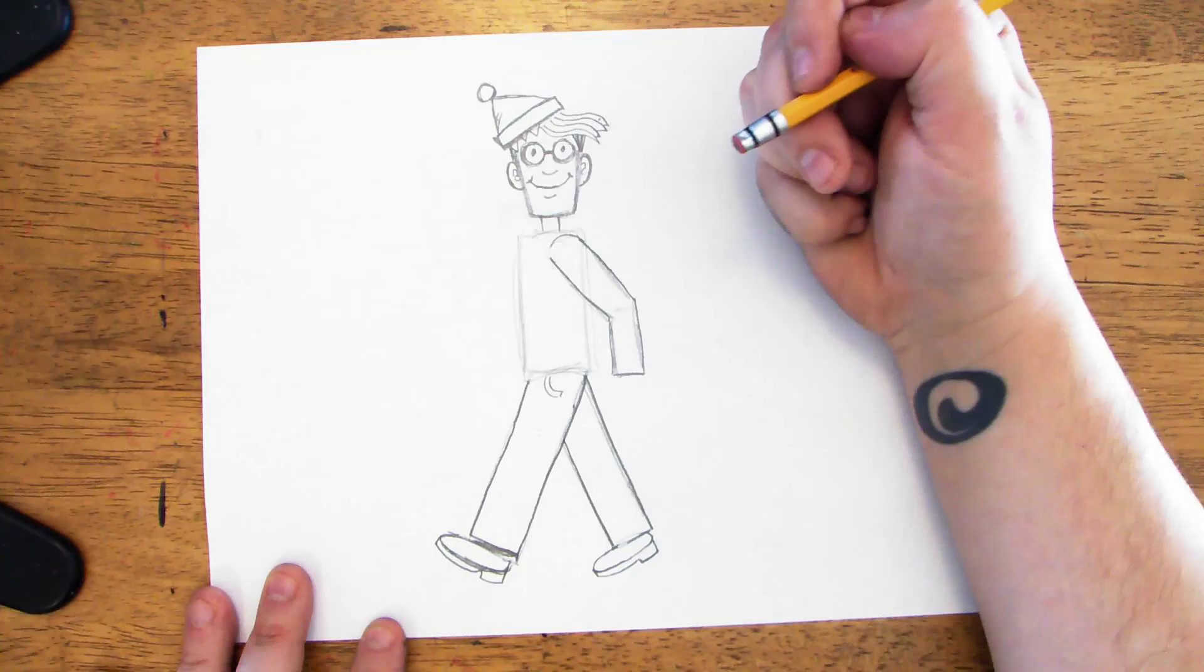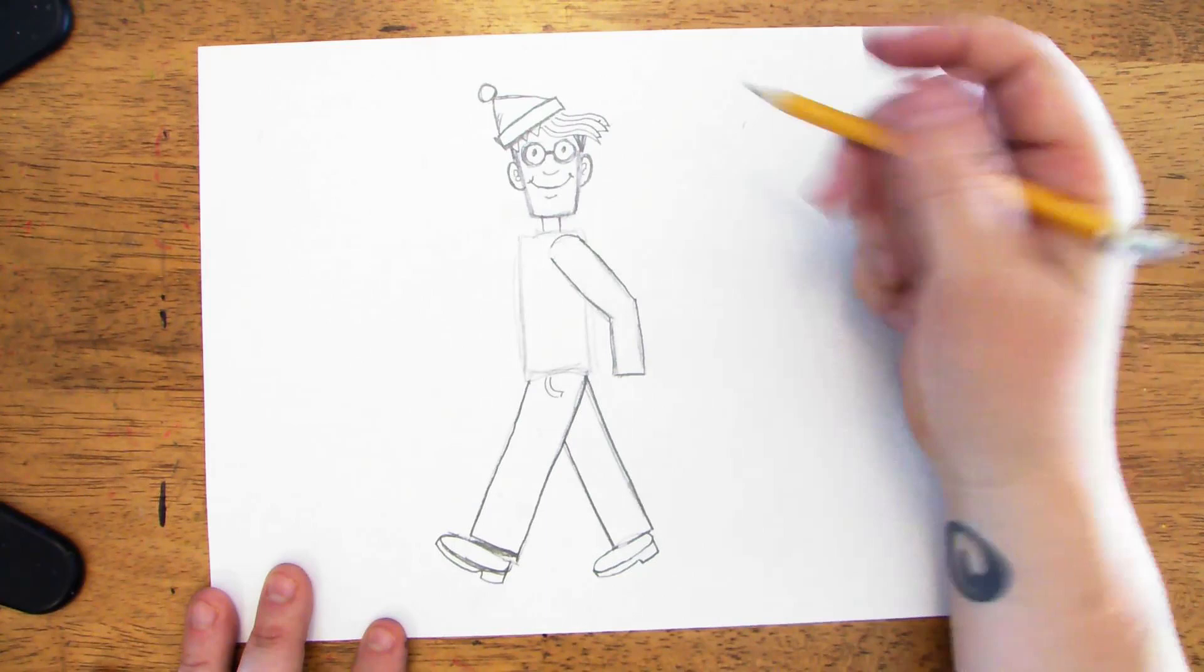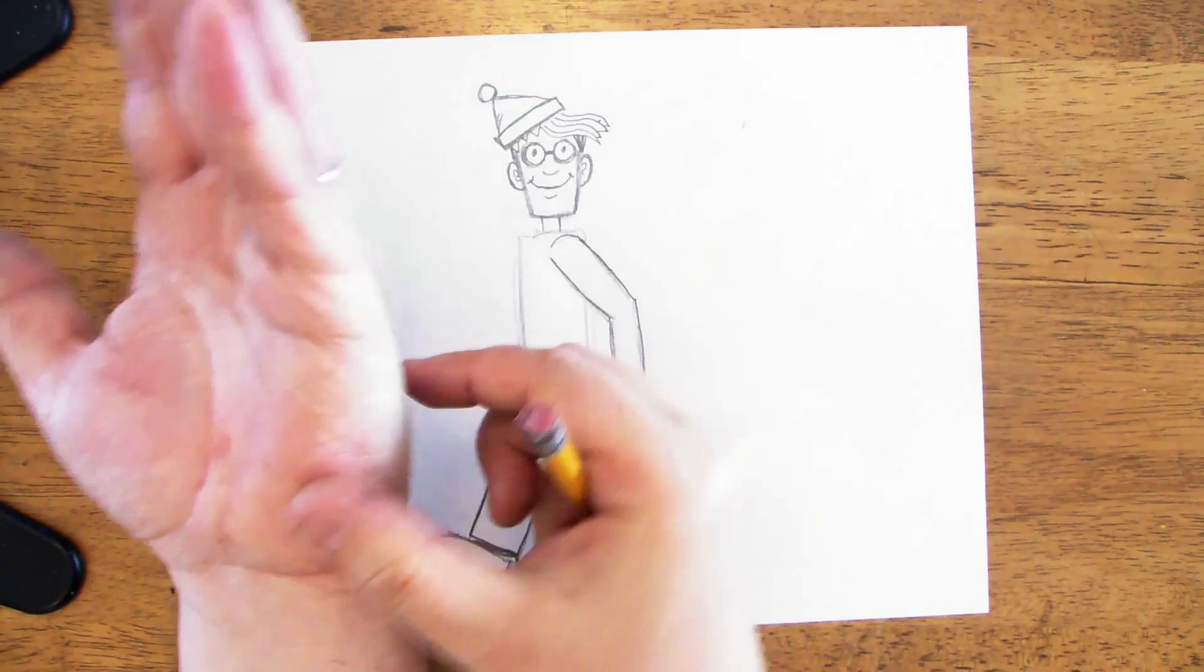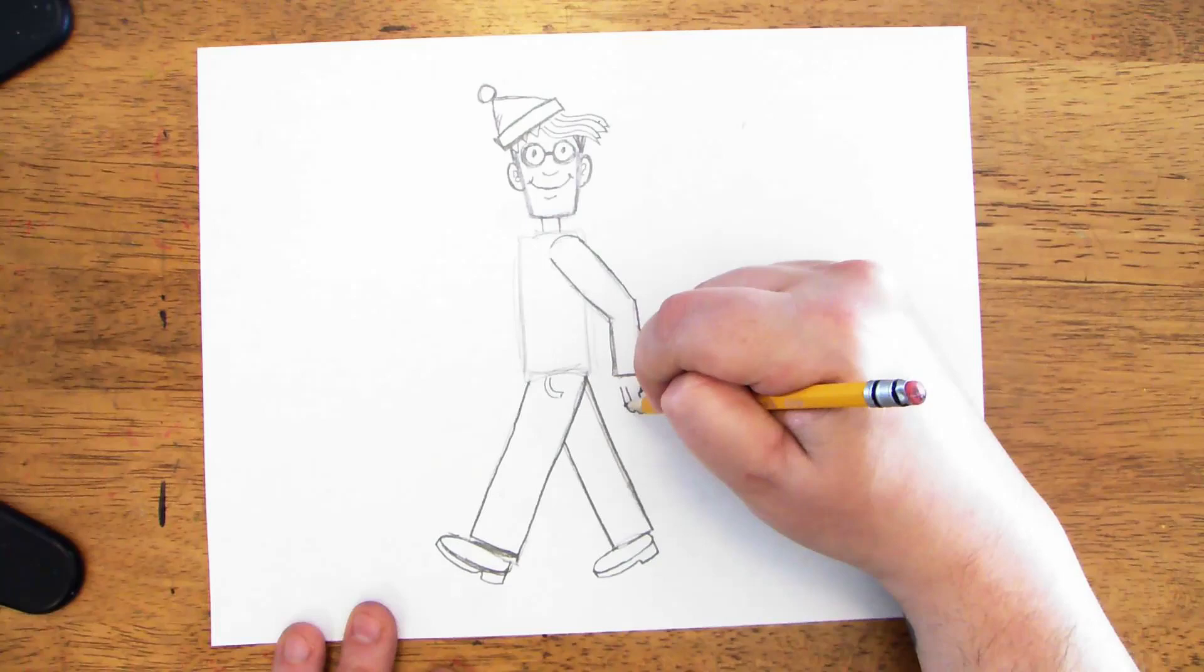Now, if you have an eraser on your pencil, you can erase that body line. You can even erase the top of that second rectangle. And then I'm just going to have his hand peeking out here. I'm going to draw first that thick part of the hand where your fingers are with a little curve. And then I'm going to draw one, two, three, four little fingers peeking out just like that.